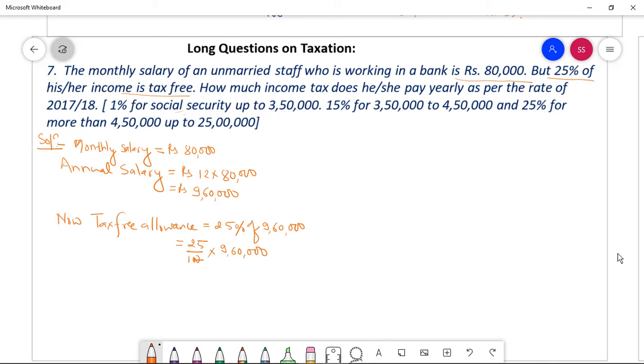25 times 9600 equal to Rs 2,40,000. It is Rs 2,40,000 which is tax-free.